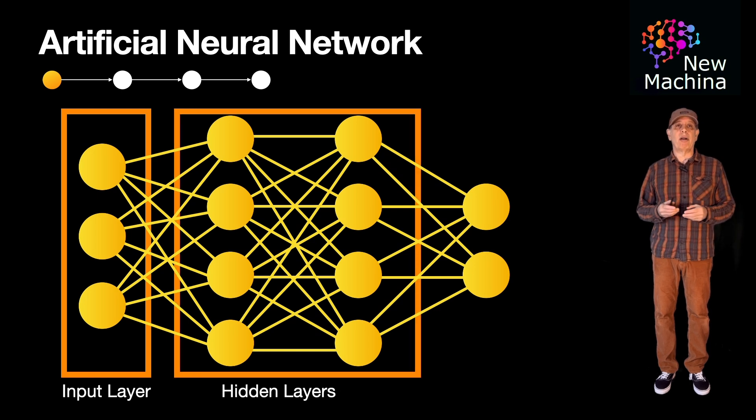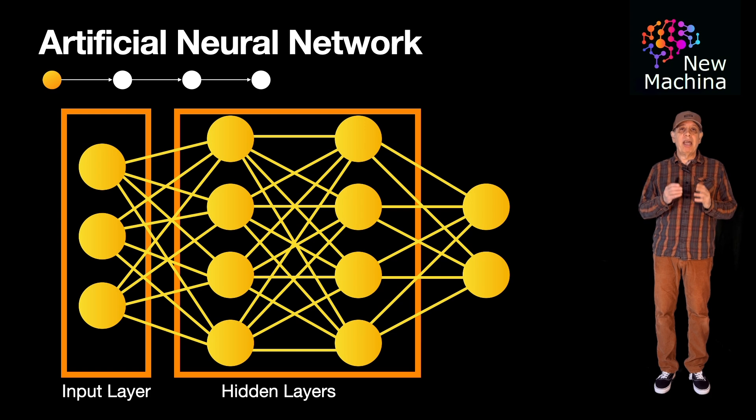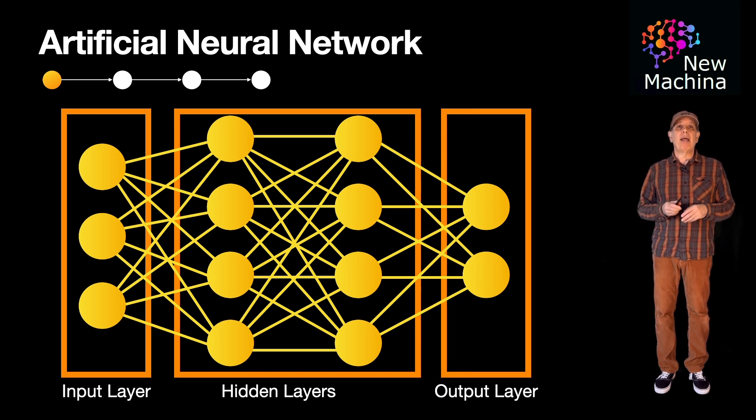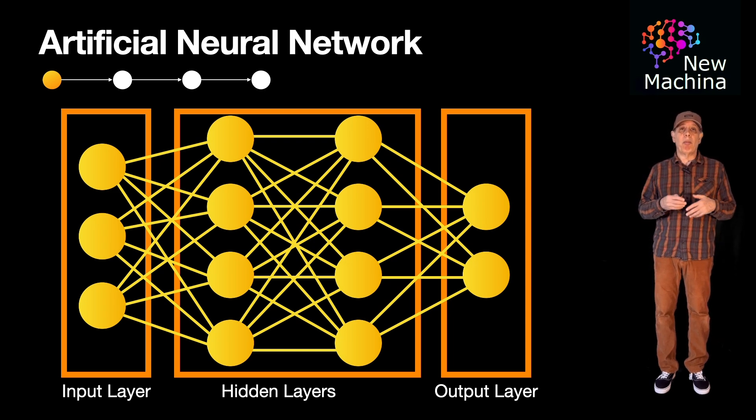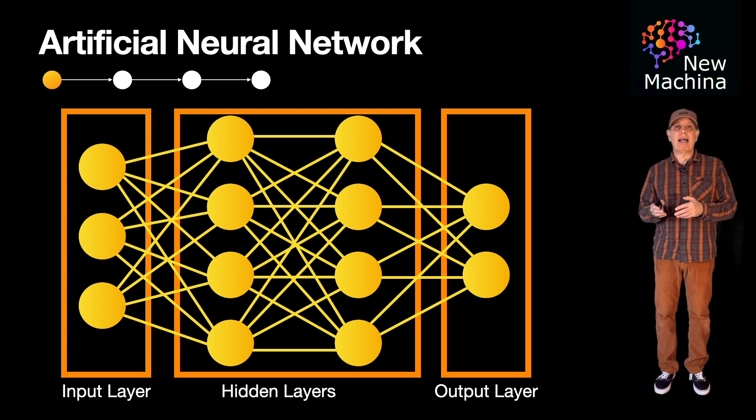Here you see two hidden layers. These are the layers between the input and output layers. The hidden layers consist of neurons that perform computations and pass the results to the next layer. Lastly, you see the output layer. The output layer produces the final prediction or decision of the network. The number of neurons in the output layer depends on the type of task: a single neuron for binary classification or multiple neurons for multi-class classification or regression tasks.